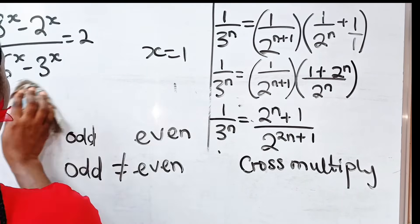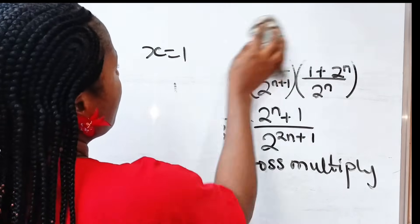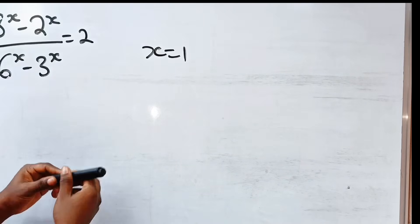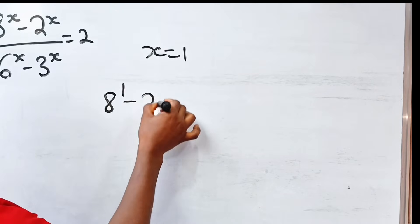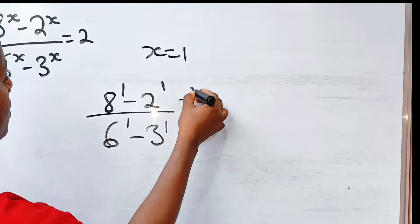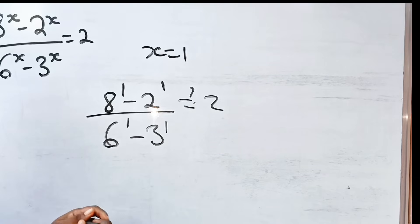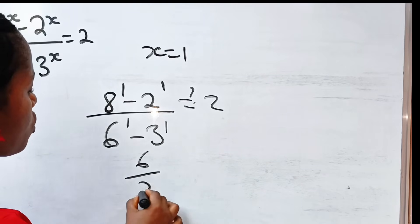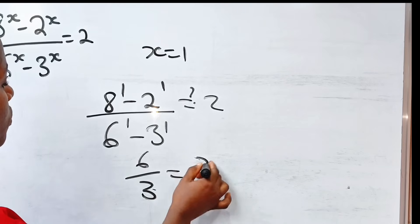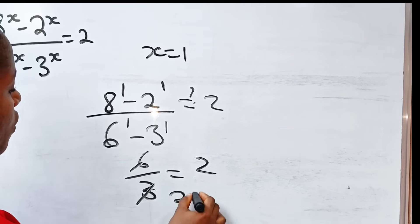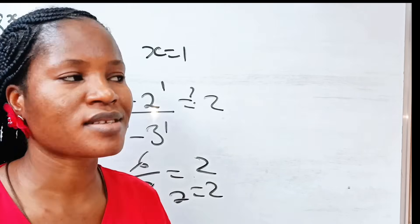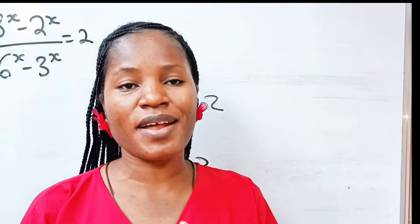Now let us verify. We have x to the power of 1 minus 2 to the power of 1, divided by 6 to the power of 1 minus 3 to the power of 1. Is this equal to 2? We have: the numerator is 6 minus 2 equals... sorry, x minus 2 is... 6 minus 3 is 3. Is 6 divided by 3 equal to 2? Yes! 6 divided by 3 gives 2, and 2 equals 2. That proves the answer is correct. Thank you so much for watching. See you in the next video. Bye!